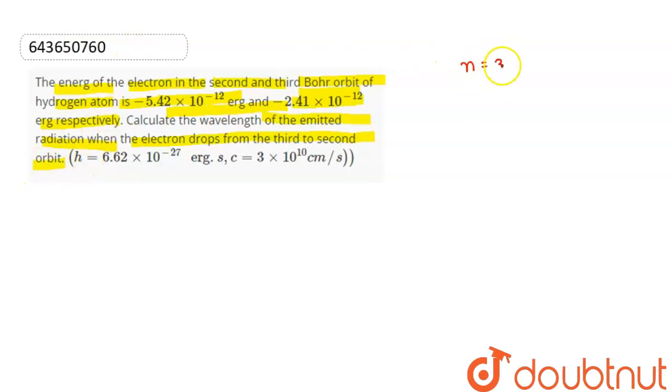Electron third orbit se second orbit mein jump kar raha hai. Now corresponding to this we need to find the wavelength. So we know that 1 upon lambda is equal to RZ square into 1 upon N1 square minus 1 upon N2 square.